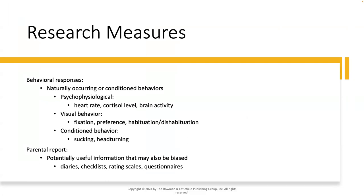Finally, we have research measures: behavioral responses and parental report. Behavioral responses are naturally occurring or conditioned behaviors. Psychophysiological measures include heart rate, cortisol level, brain activity, and visual behavior — such as fixating their eyes on something or preferring to look at something longer than something else. Conditioned behaviors include sucking and head turning. These are all behavioral responses that we measure in our research.